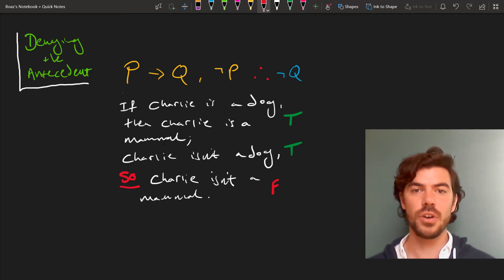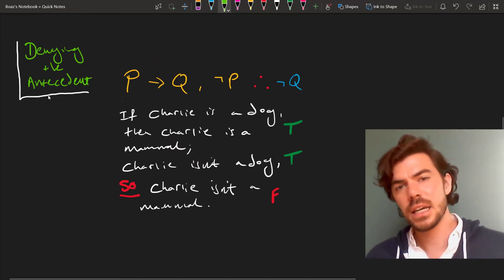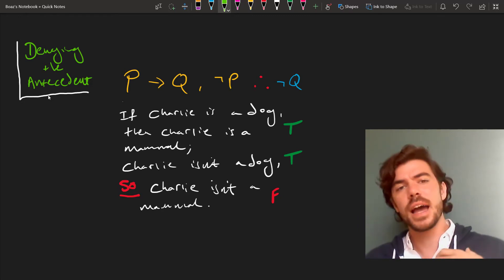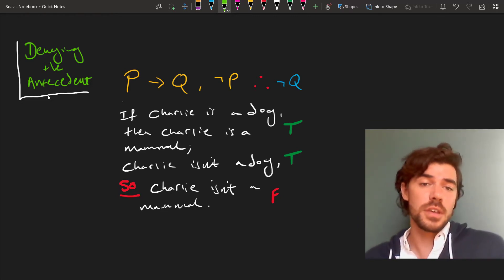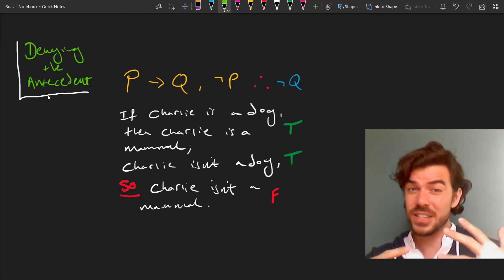Just because the antecedent is false doesn't mean the consequent is false too. So you might think, well this is an obvious fallacy and who would fall for such a thing? But the way that conditionals work in natural language can be a good deal more difficult. And there are instances in which we might confuse them with biconditionals. And that's often how these conditional fallacies can look deceptively valid.